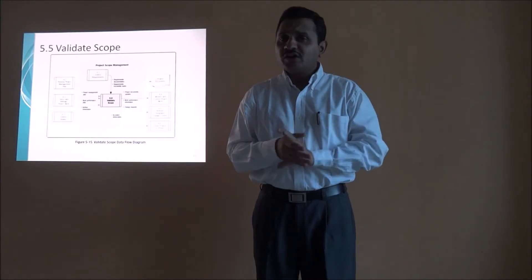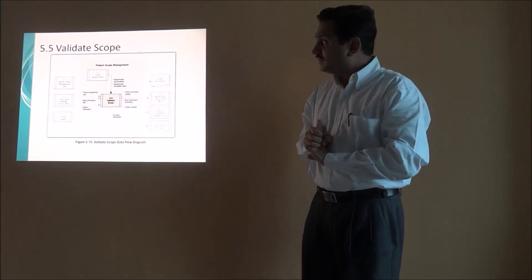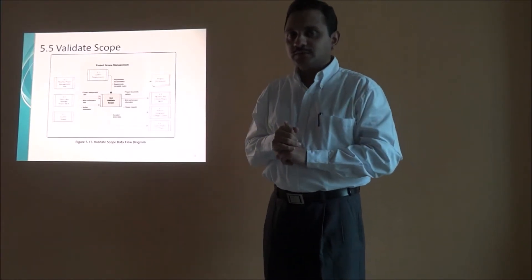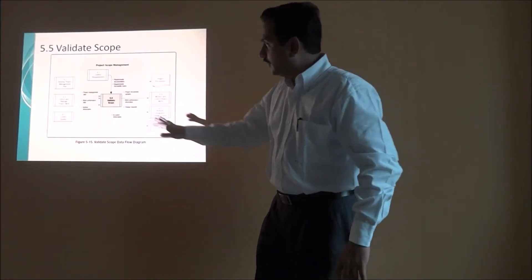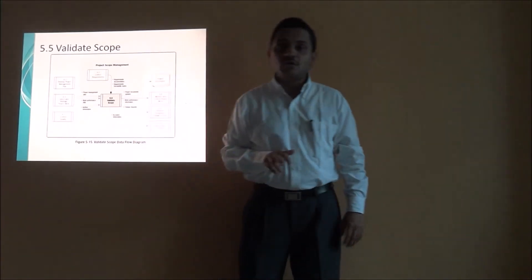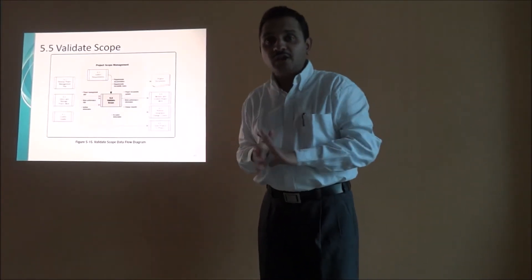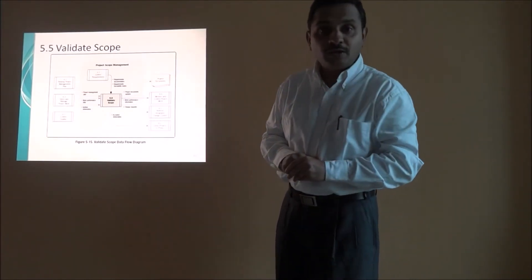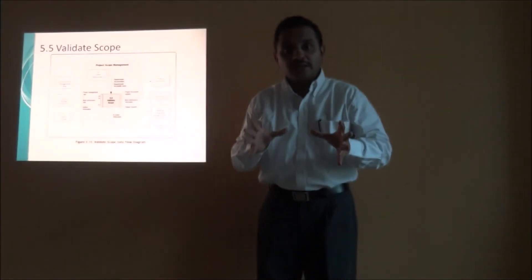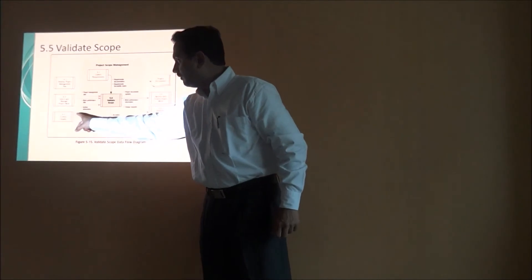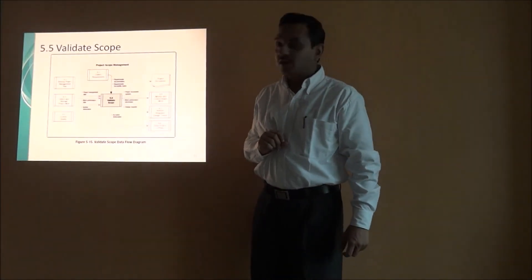Now you heard the story. Let's understand the data flow. Mrs. De Souza had come for acceptance of the flat. Before that, the quality control department had already come and inspected the flat. Look here — the input to Validate Scope is Control Quality. That means the output of Control Quality, which is the verification of the deliverable — here the deliverable was the flat itself — feeds into Validate Scope. When Mrs. De Souza came, verified deliverables had to be there for her to accept. So Control Quality feeds verified deliverables into the Validate Scope process.